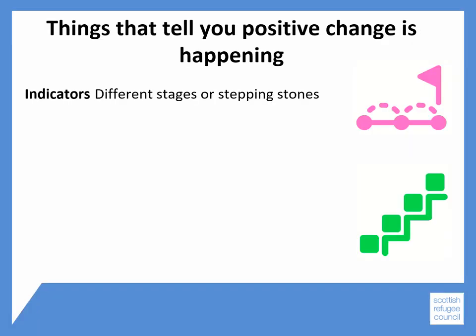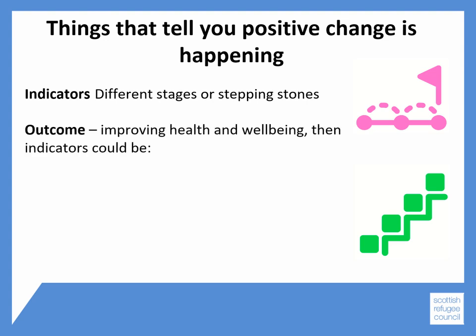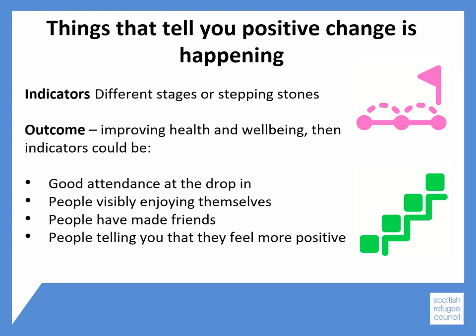It can be useful to use indicators to show the different stages of a project's development, just like the stepping stones in crossing a river. So if your outcome is about improving the health and well-being of people in your community, then the indicators could be attendance at the drop-in, people visibly enjoying themselves perhaps through photographs, that people have made friends and tell you the value that this has had for them, and that they tell you the whole experience has made them feel more positive about their lives.